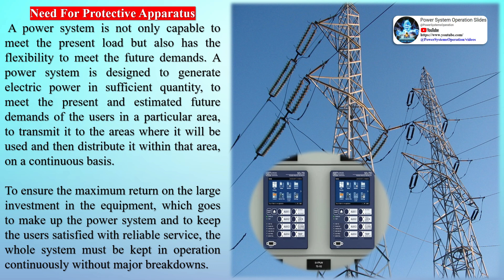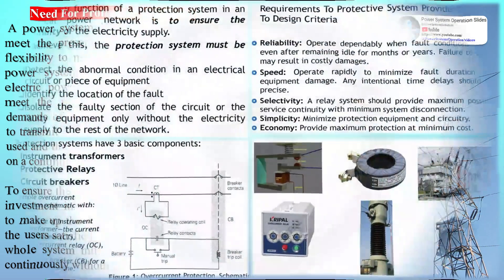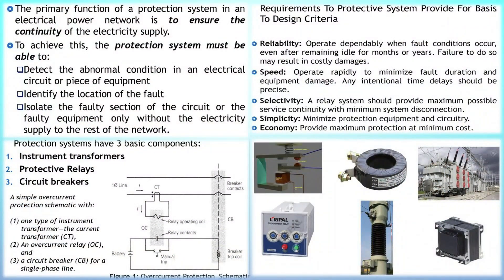The protective systems comprise of five different components: current and voltage transformers, to step down high voltage and current of the electrical power system; protective relays, which sense the fault to initiate a trip; circuit breakers, to open and close the system based on auto-recloser commands; and batteries, to supply power in case of disconnection.